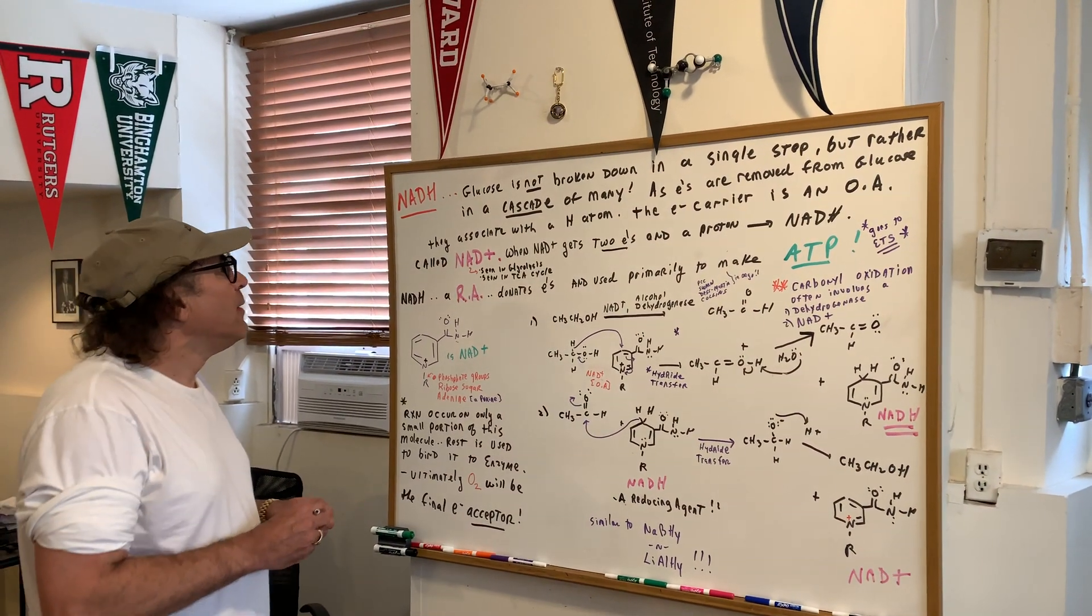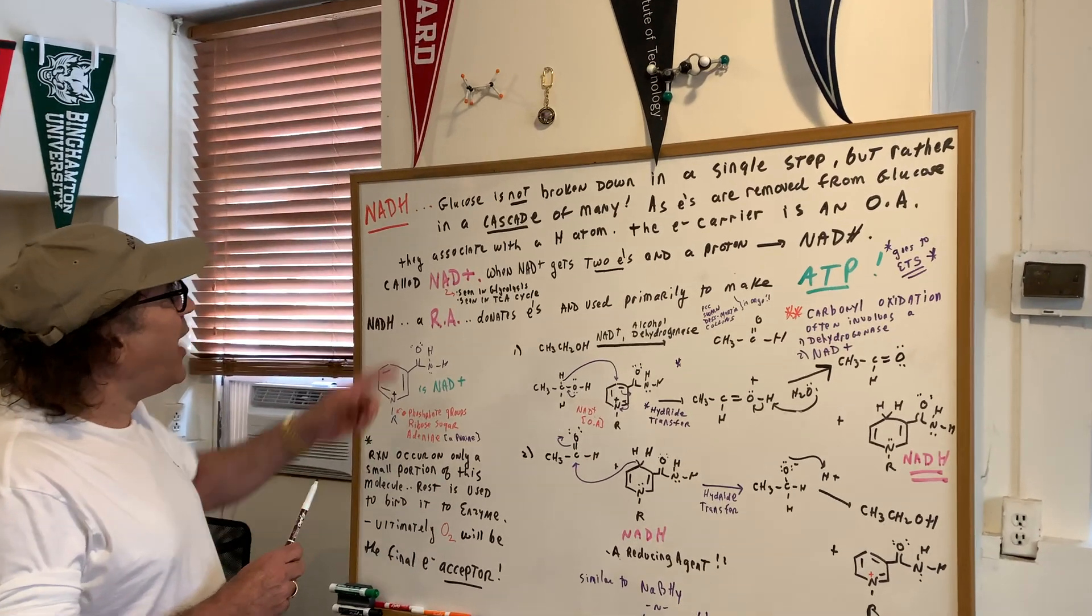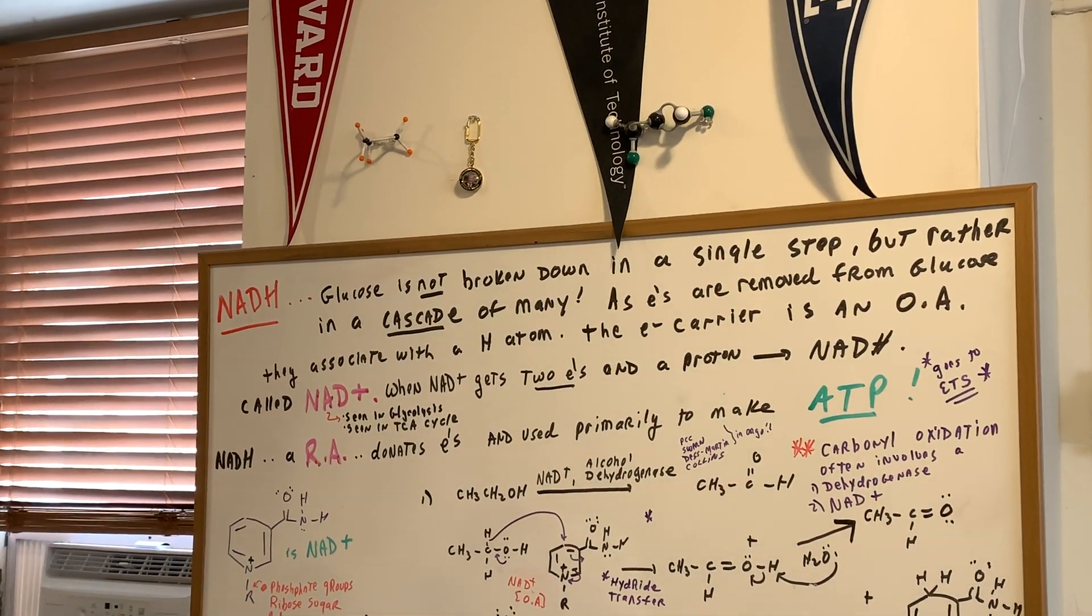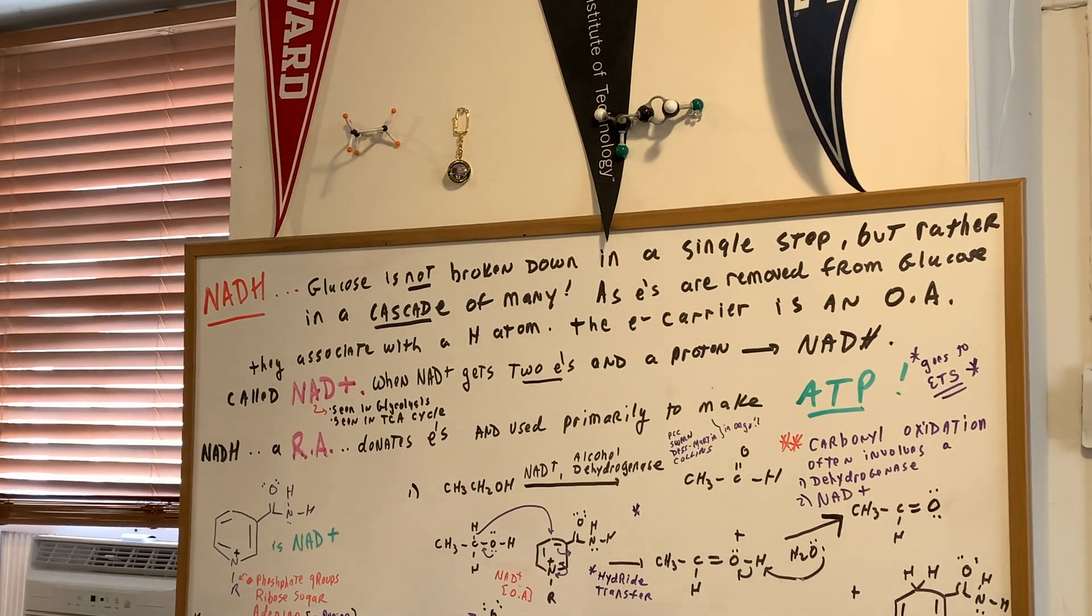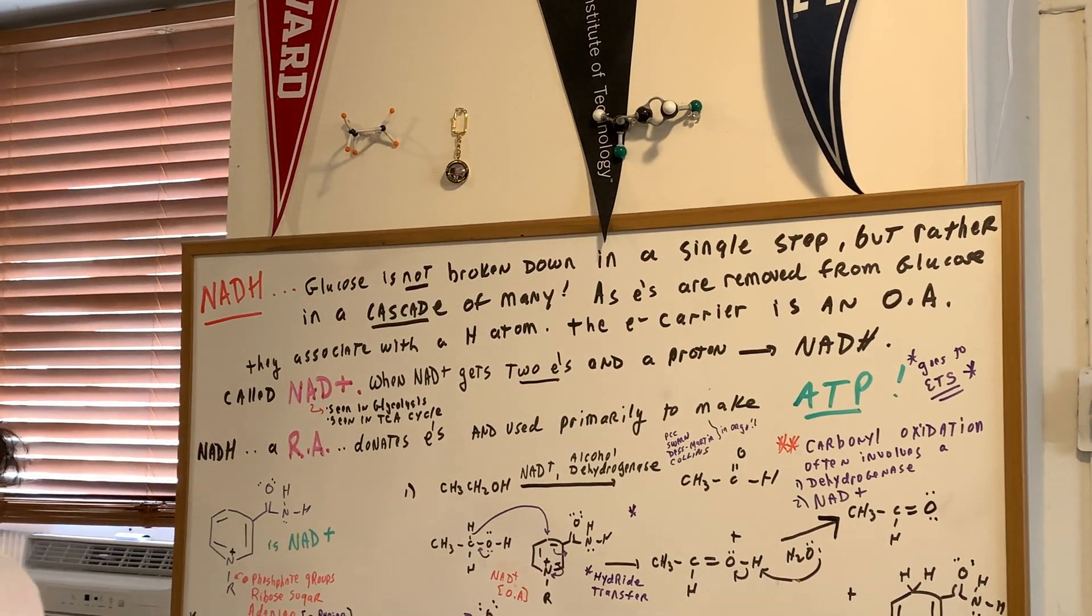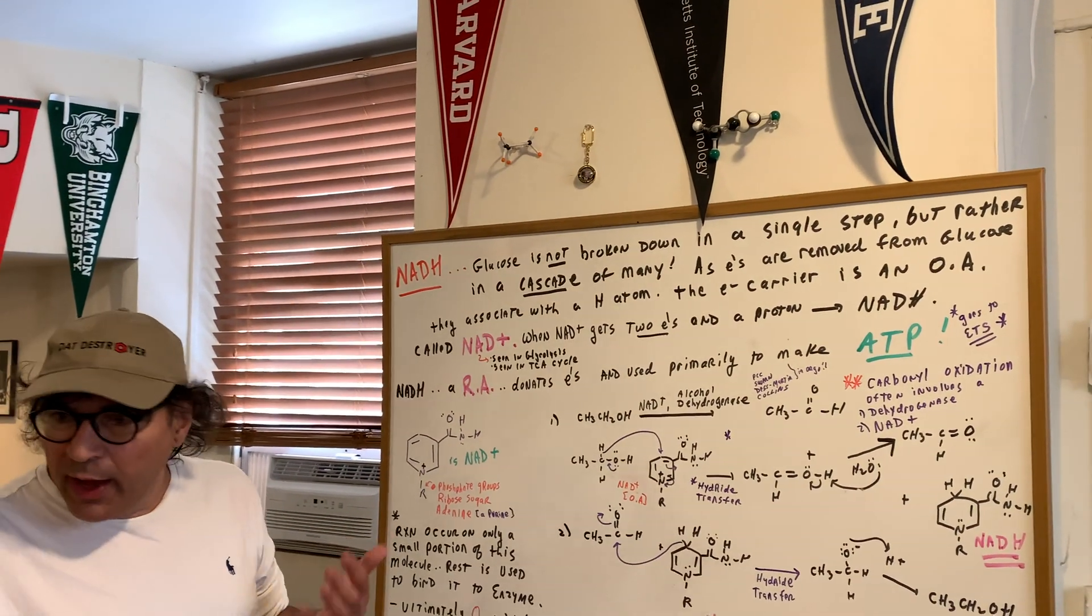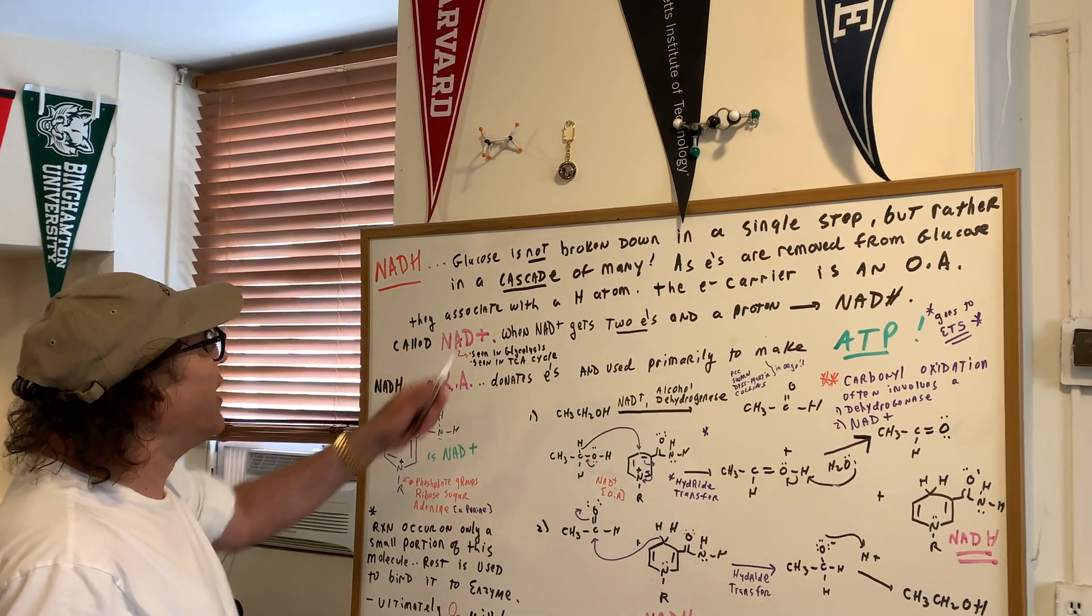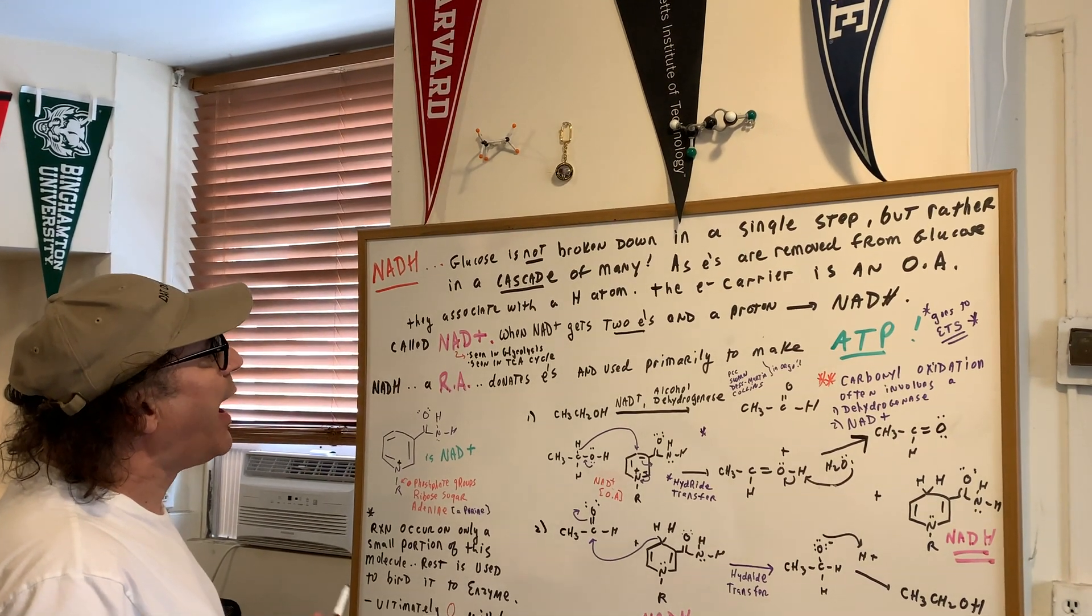If we look at the board, I wrote to you that NADH is an electron carrier. Now, glucose is not broken down as you all know in a single step, but rather in a cascade of many steps. And we've talked about all this. As electrons are removed from glucose, they associate with a hydrogen atom.